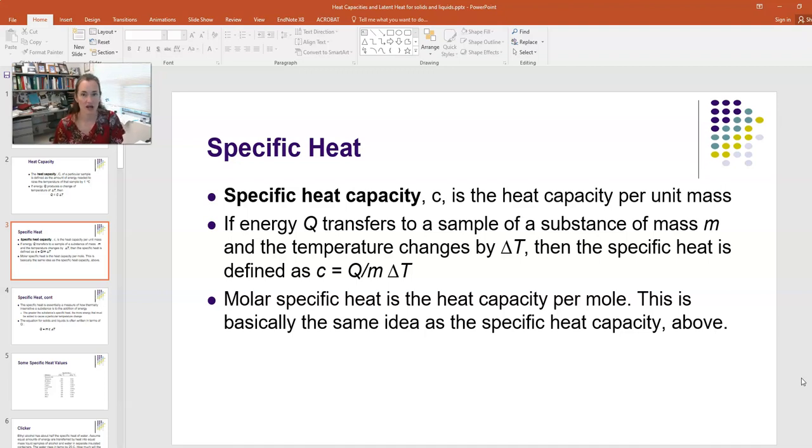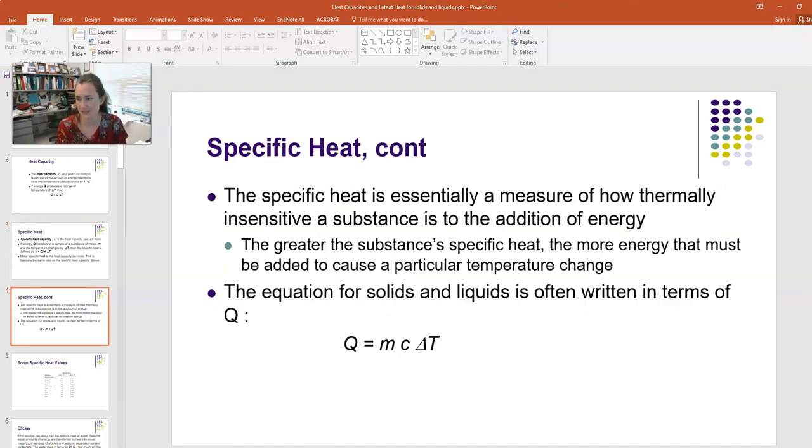In this lecture I'm focusing on heat capacity for solids and liquids. Most work is done in heat capacity per unit mass, or joules per kilogram per degree Celsius. For gases, they usually use molar heat capacity, which is energy per mole per temperature change, in units of joules per mole per Kelvin. We'll talk about ideal gases separately. For solids and liquids, we use joules per kilogram per degree C.